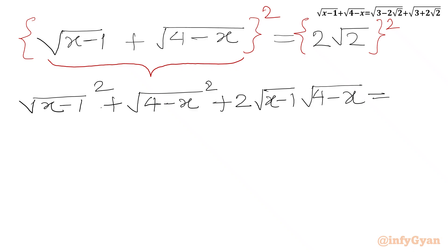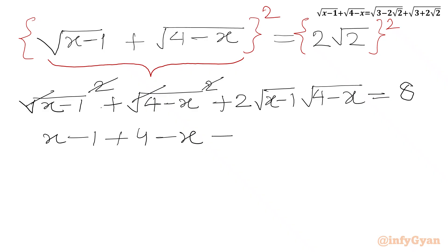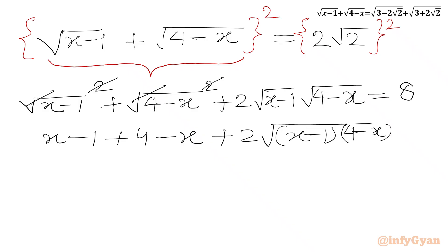On the right hand side, the square of 2√2 gives us: square of 2 is 4, square of √2 is 2, so 4 times 2 is 8. Canceling square root with the square on the left, we get: x minus 1 plus 4 minus x plus 2 times square root of (x minus 1)(4 minus x) equals 8.